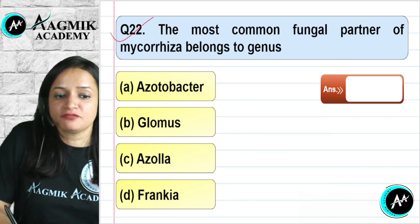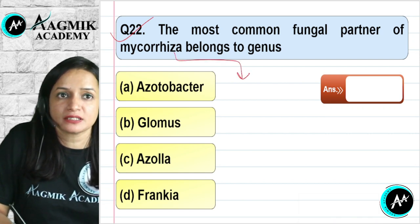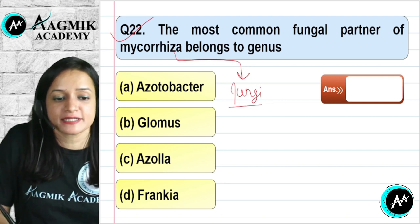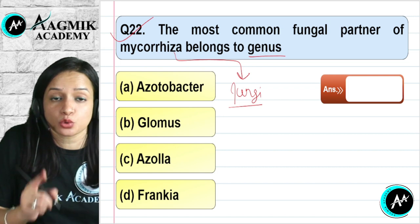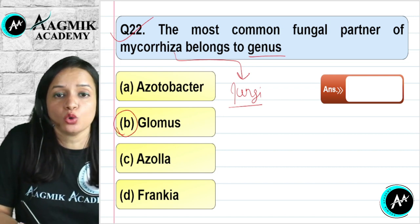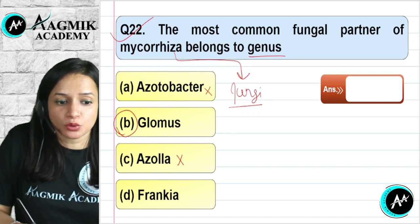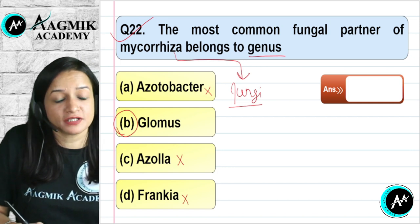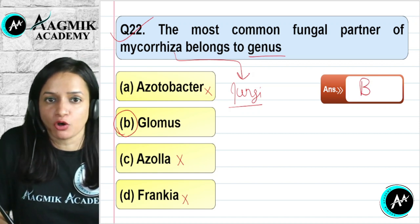Question number 22: The most common fungal partner in mycorrhiza is from which genus? In the association between roots of higher plants and fungi, the most common fungal genus is Glomus. Azotobacter and Frankia are bacteria, and Azolla is a fern. Glomus is the fungal genus. The correct option is B.